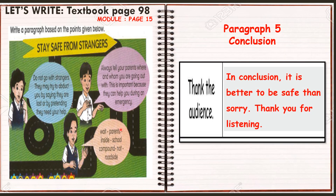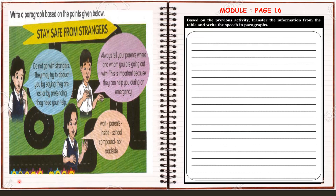For paragraph 5, you have to thank the audience and then you can write a conclusion. In conclusion, it is better to be safe than sorry. Then you can thank the audience: Thank you for listening. So your task is to transfer the information from the table that you write, and then you have to write the speech in paragraphs. Do this in your module, page 16.